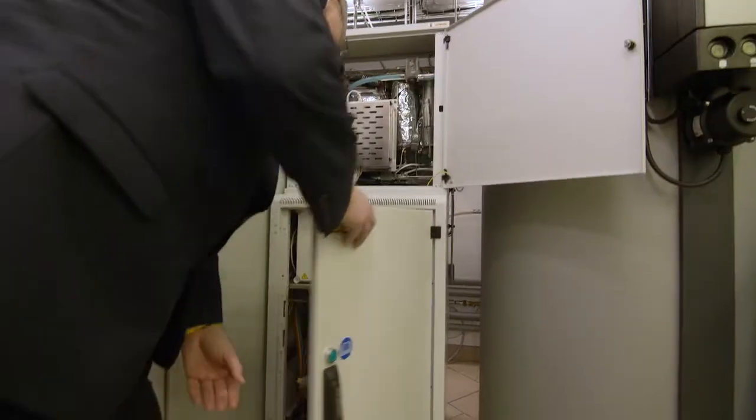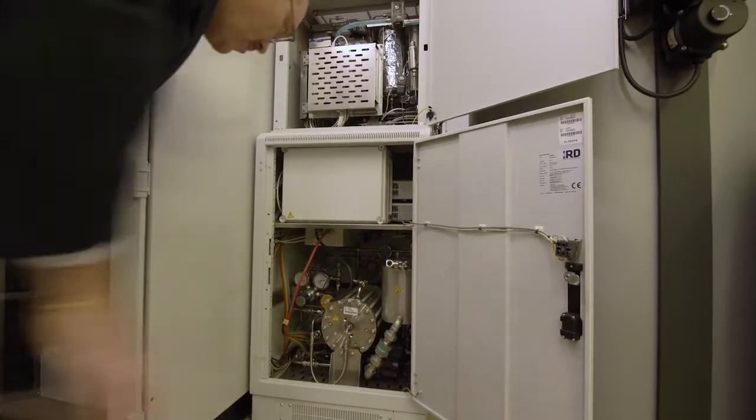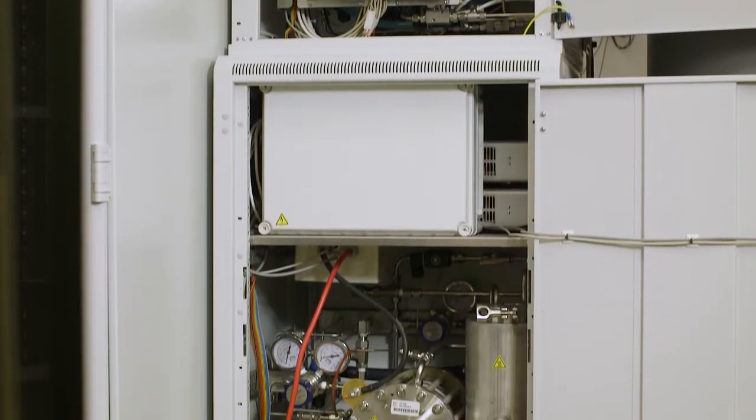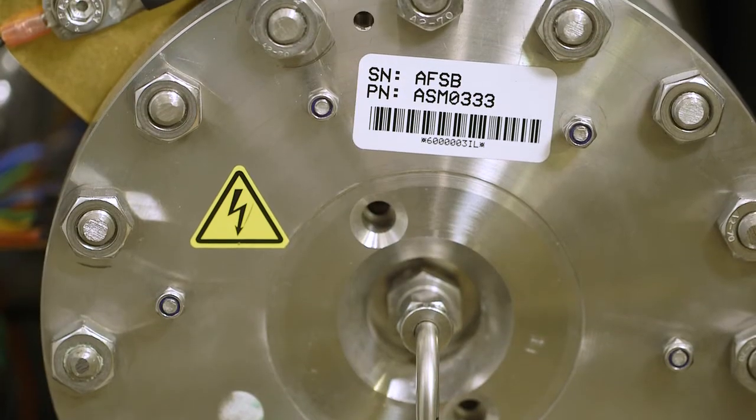There are different types of electrolyzers. The most common is alkaline and PEM. And what you see here is a PEM version and the capacity on this one is one normal cubic meter per hour.